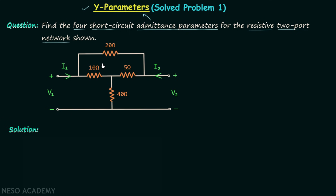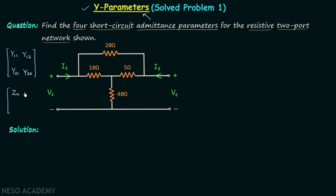This is our two port network with only resistors, hence it is called a resistive two port network. We are required to find y11, y12, y21, and y22 — the four elements of the admittance matrix. In order to find these four parameters, we will first find the four impedance parameters z11, z12, z21, and z22.